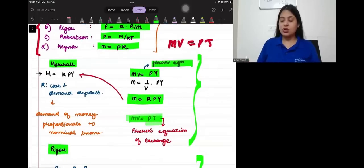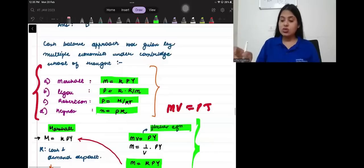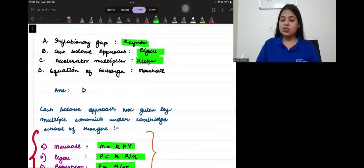M V is equal to P T. And that equation of exchange, it was given by Fischer. So, the equation of exchange was given by Fischer. And that is what is a wrong statement.